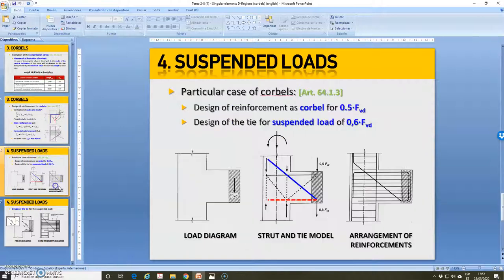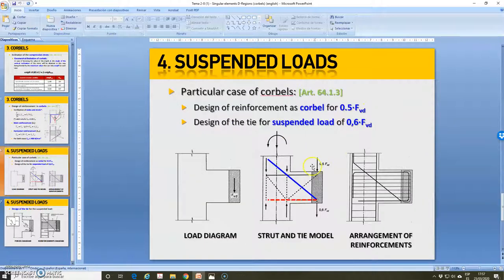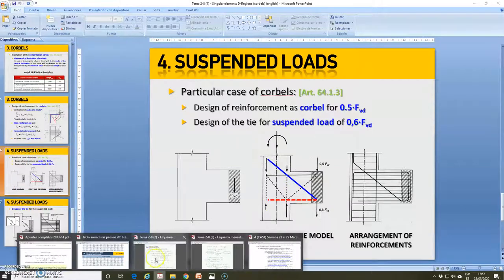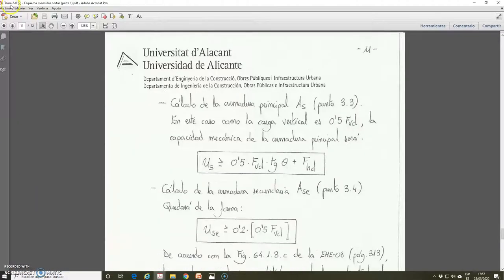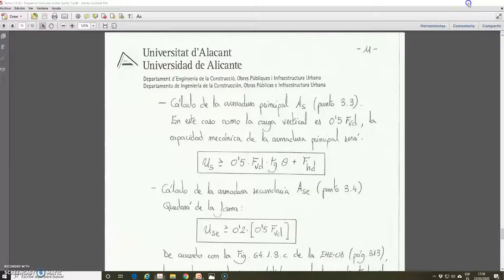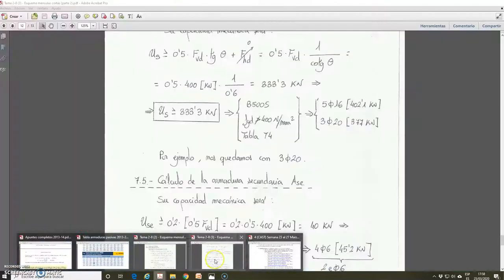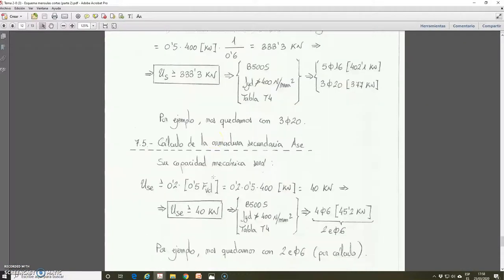The expression is the same. It is also expressed here in this document, in document Unit 2A2, how to calculate the secondary reinforcement higher or equal than 0.2 multiplied by 0.5 FBD, which is in this case the part of the vertical force that is considered in this simplified method applied on the top of the corbel. So if we come back to the solution of the exercise, which is here, we are going to calculate the secondary reinforcement.